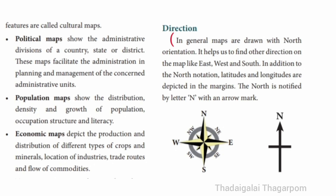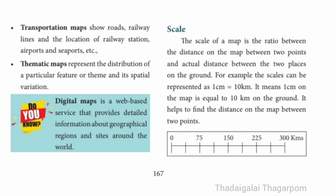In general, maps are drawn with north orientation. It helps us to find other directions on the map like east, west and south. The scale of a map is the ratio between the distance on the map between two points and the actual distance between the two places on the ground.